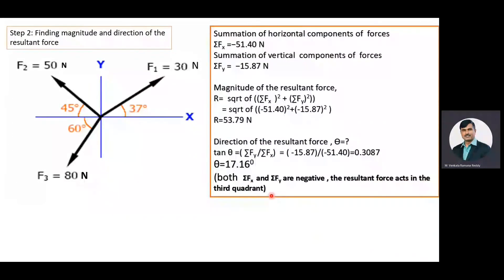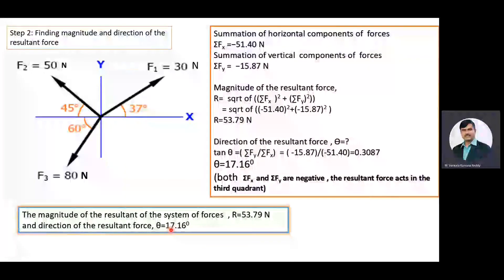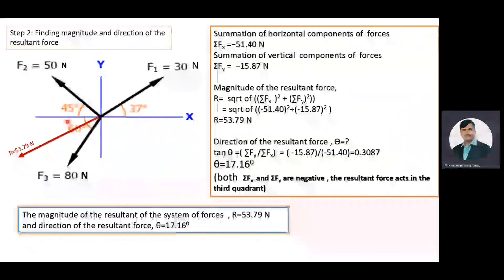The magnitude of the resultant force system is equal to 53.79 Newton, and the direction of the resultant force theta is equal to 17.16 degrees with the x-axis. The resultant force is acting in the third quadrant, with a magnitude of 53.79 Newton making an angle of 17.16 degrees with the x-axis.